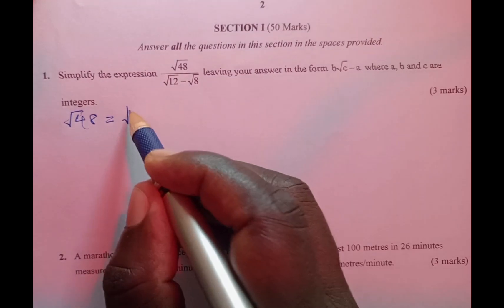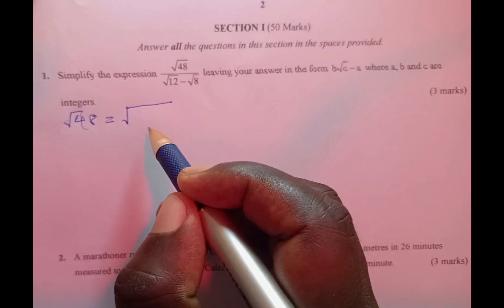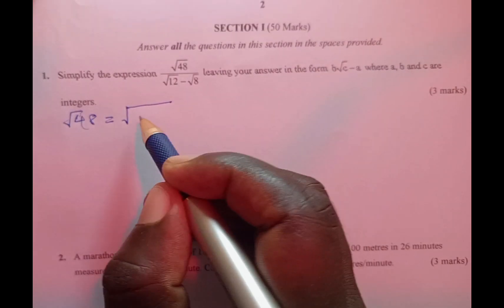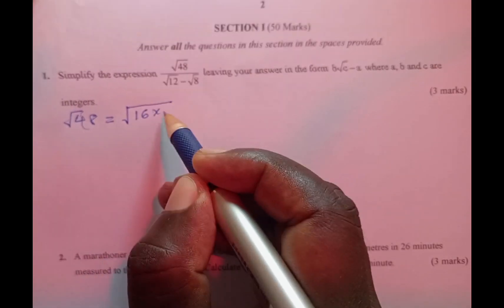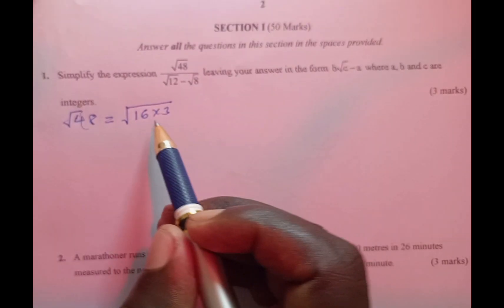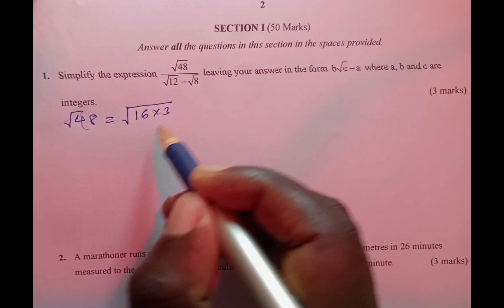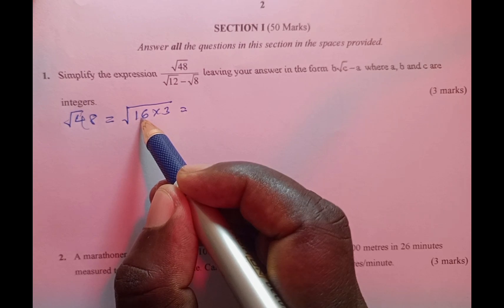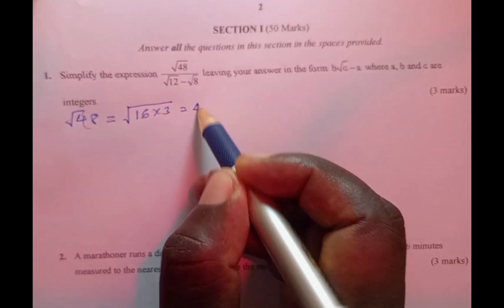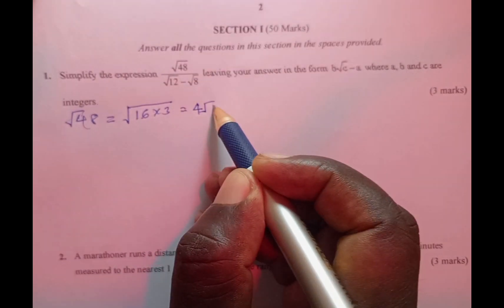To simplify √48, we split 48 into two numbers where one must have a direct square root. We have 16 times 3, which is equivalent to √16 × √3. The square root of 16 is 4, therefore we have 4√3.